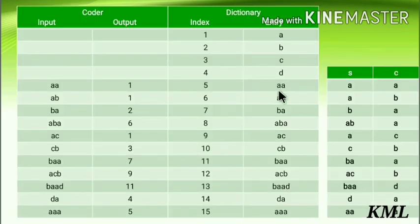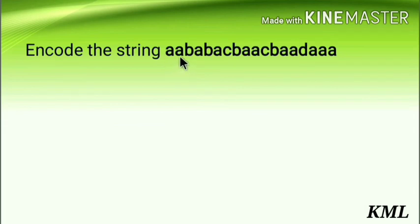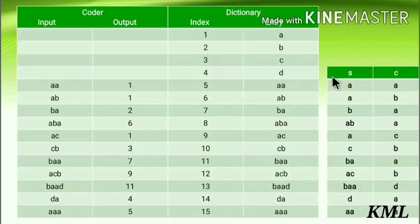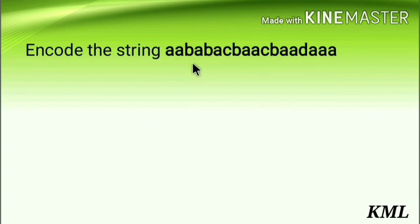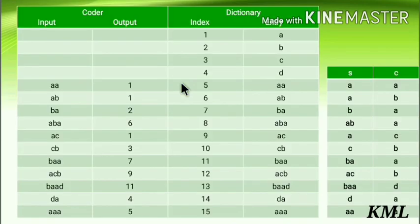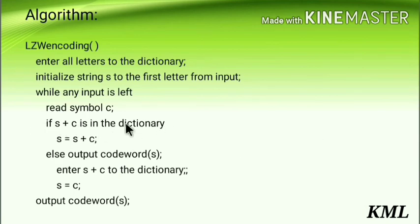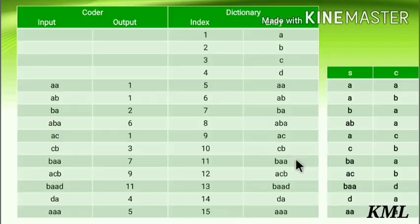To recap: S initially points to the first letter and C to the second. Concatenate both and check if they are in the dictionary. If not in the dictionary, take those and output the code word for S. If already in the dictionary, increment counter C and S becomes the concatenation of the previous S and previous C. These are the two cases to remember. I hope it was clear — if you have any doubts, ask in the comment section. Thank you for watching, keep learning.